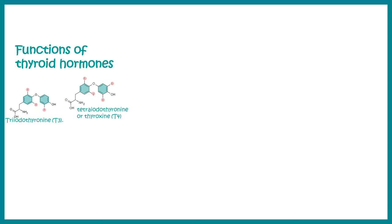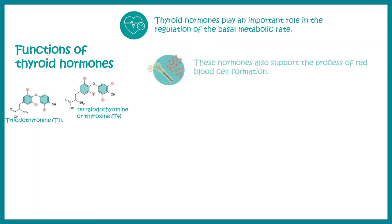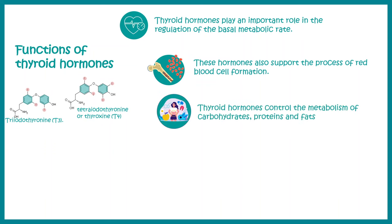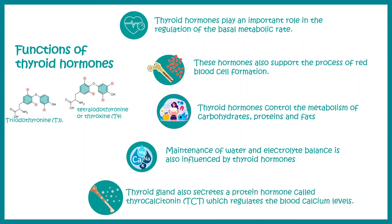Thyroid hormones have a multitude of functions. For example, they regulate basal metabolic rate, erythropoiesis, and the metabolism of carbohydrates, fats, and proteins. They are also involved in maintenance of water and electrolyte balance. Lastly, thyrocalcitonin, derived from the thyroid gland, also regulates blood calcium levels, so thyroid hormones play a variety of functions.